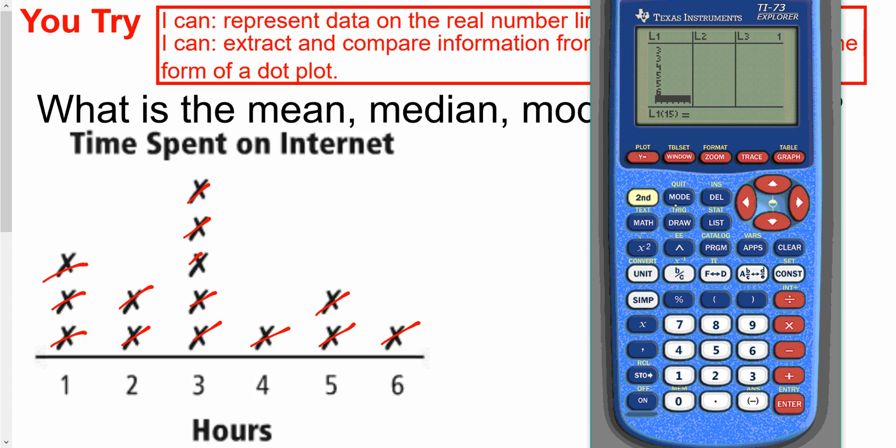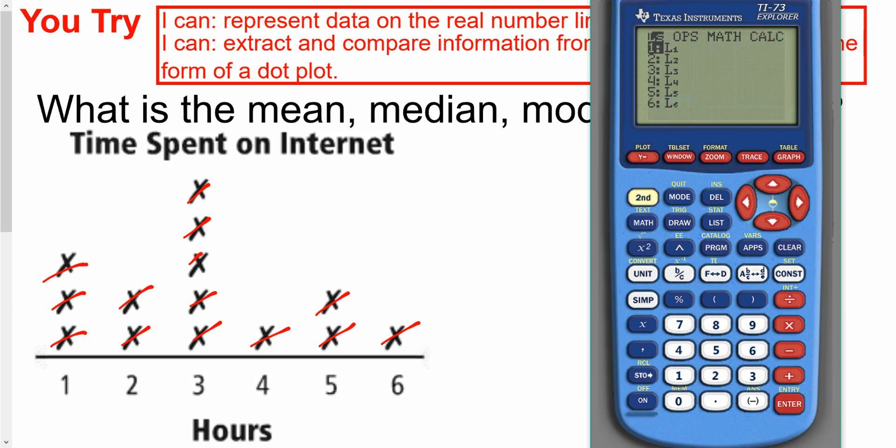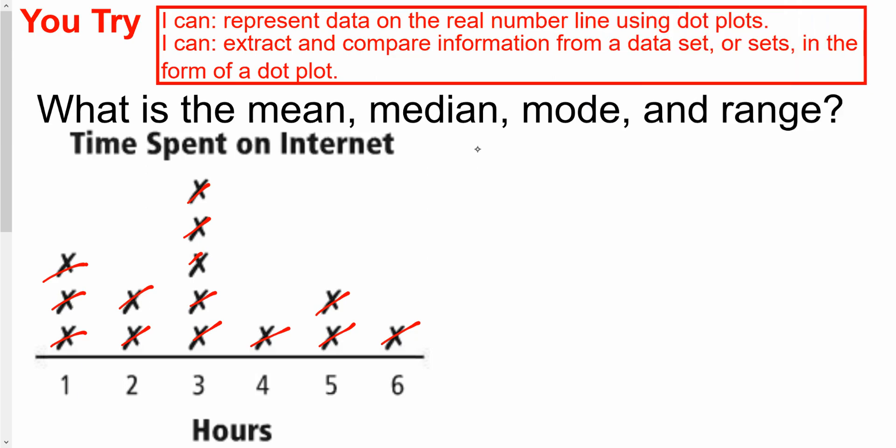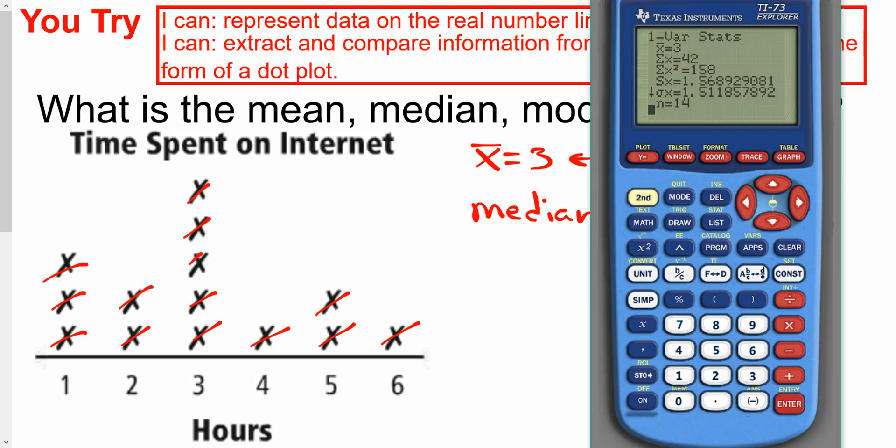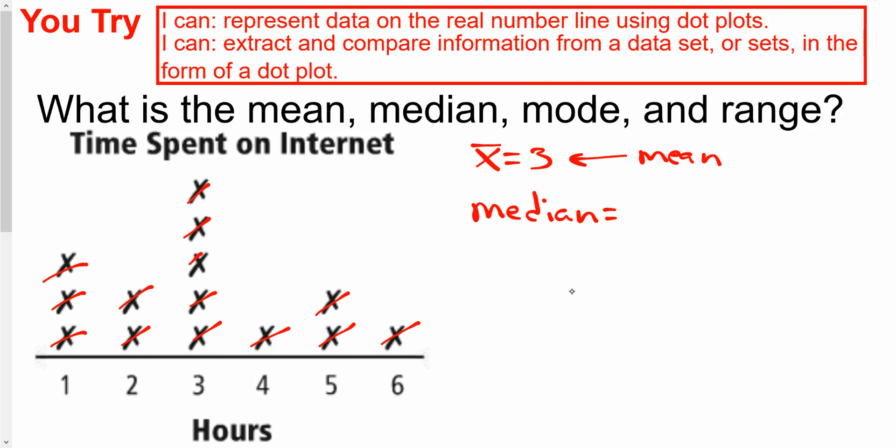Then we're going to go into stats. So second, stat. Over to calc. And run 1 var stats on my list. It says that the x bar is 3. Remember that x bar is the mean. All right. So we found the mean. The median, just scroll down here and find the median. The median is also 3.